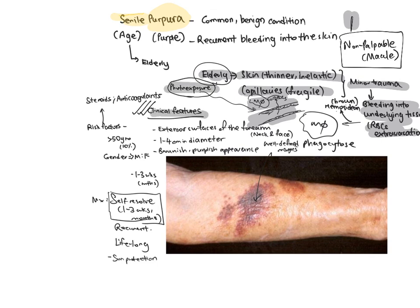In terms of clinical features, it tends to occur on the extensor surfaces, is 1 to 4 cm in diameter, and is often brownish and purplish due to the pigment hemosiderin. Risk factors include age over 50, and the use of steroids and anticoagulants. It generally has a well-defined margin, as seen in this picture. In terms of management, it tends to self-resolve in 1 to 3 weeks or up to months. It is recurrent, so it will tend to occur again, and it is important to use sun protection. Thank you.